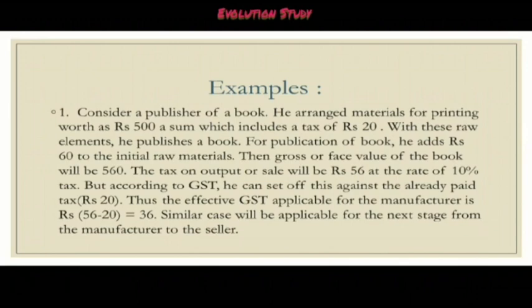Let me explain this with an example. Let's consider a publisher of a book. He arranged the materials for printing worth rupees 500, a sum which includes a tax of rupees 20. With these raw materials he publishes a book, and for the publication he adds rupees 60. The gross or face value of the book will be rupees 560. The tax on the output or sale will be rupees 56 at the rate of 10 percent. But according to GST, he can set off this against the already paid tax of rupees 20. Thus the effective GST applicable for the manufacturer is rupees 56 minus 20, which means rupees 36. A similar case will be applicable for the next stage from the manufacturer to the seller.